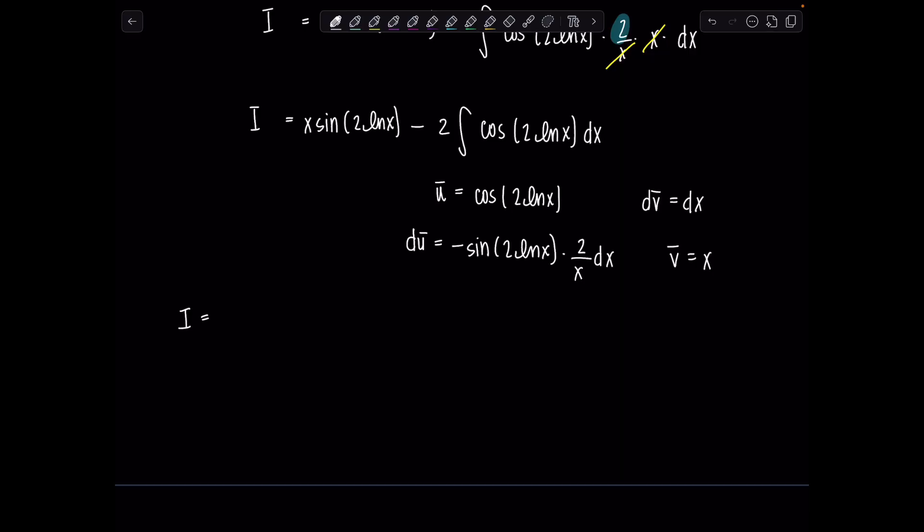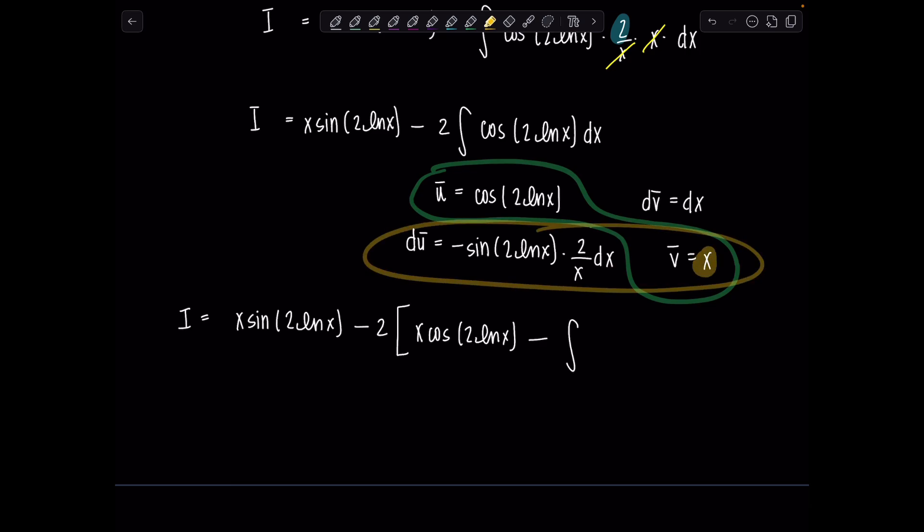So my original integral i equals x sine 2 ln of x minus 2 times, and then now it's time for the by-parts formula. So u bar, v bar, that'll be x cosine of 2 ln of x minus integral du bar, v bar. I'm just not even going to write the x's because they're going to cancel out. But we will have a 2. Let's put that out here. And then since there's this minus sign here, that'll switch that to a plus. I put the 2 outside, and then we've got sine of 2 ln of x dx. Voila.